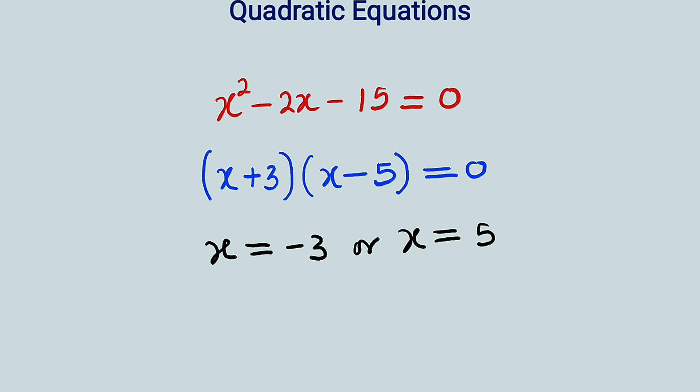One interesting thing about roots of quadratic equations is that if you multiply them together, it is like taking the constant term divided by the leading coefficient. This time around, we have our leading coefficient equal to 1. So once the leading coefficient is equal to 1, the product of roots will always be equivalent to the constant. Therefore, minus 3 multiplied by 5 will always give us minus 15.